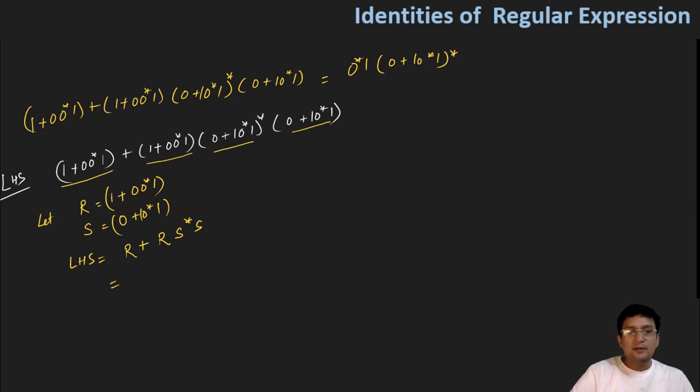What can we say about this? If we take r common, this becomes r times (ε + s*s).